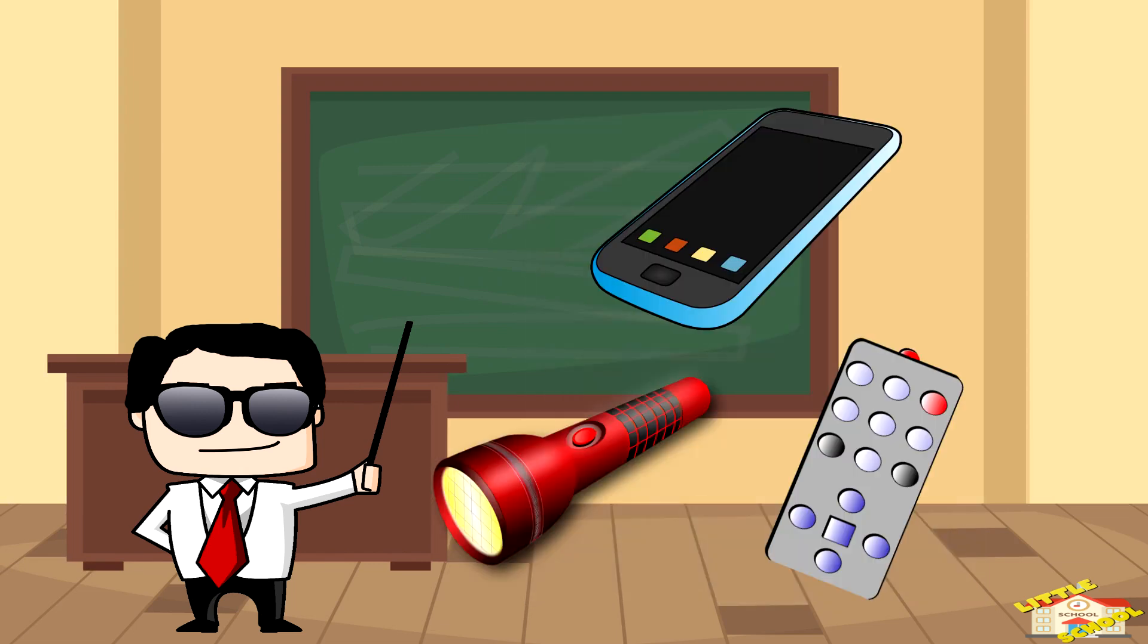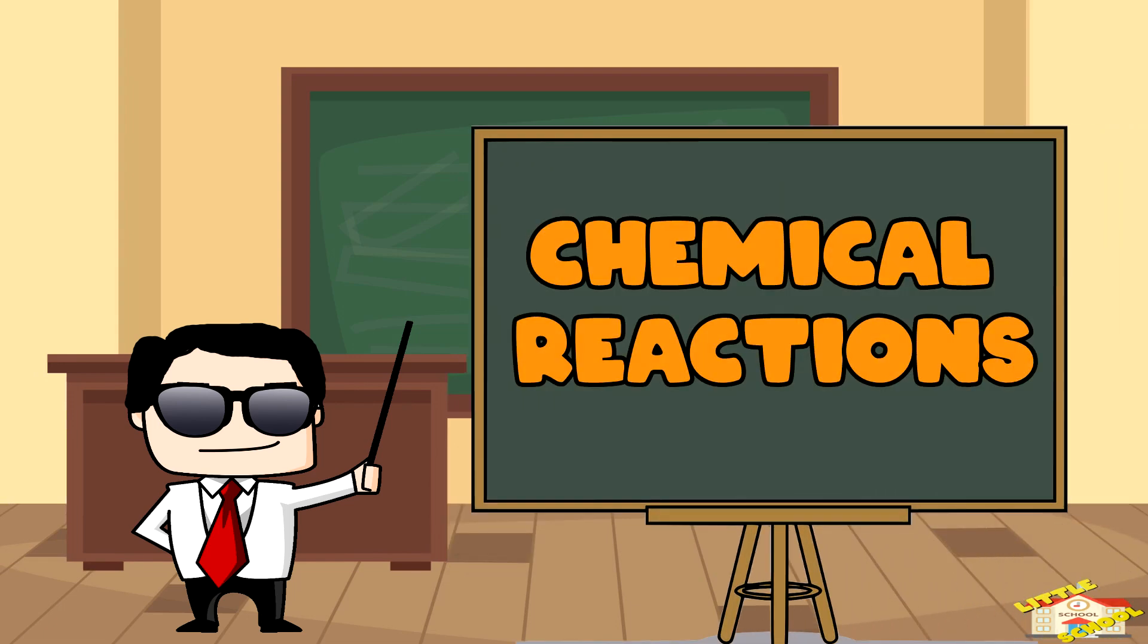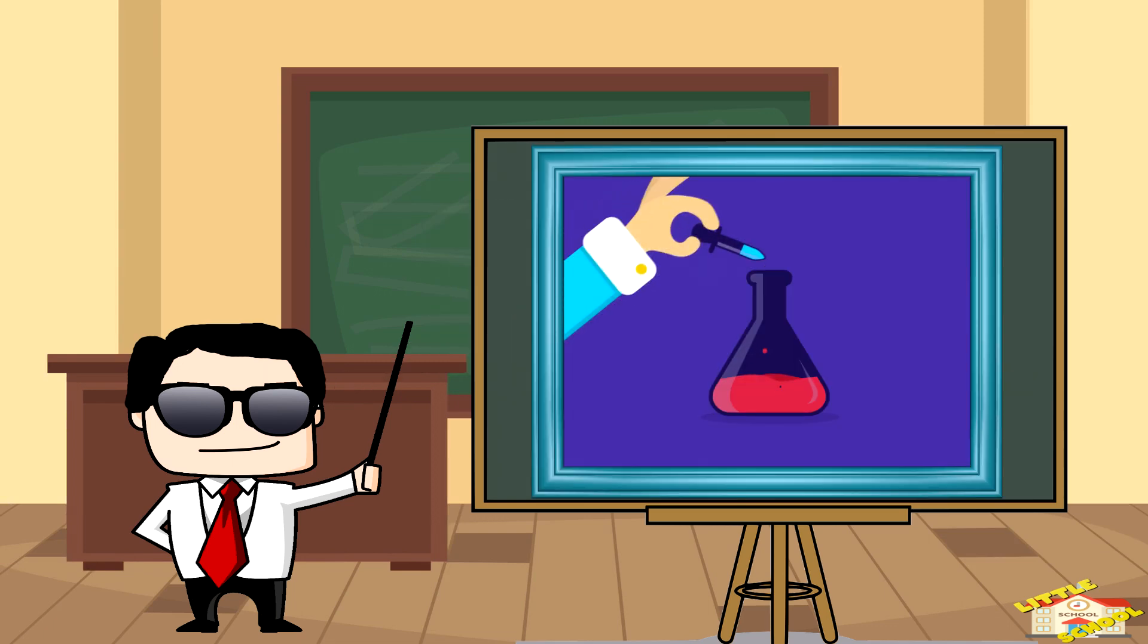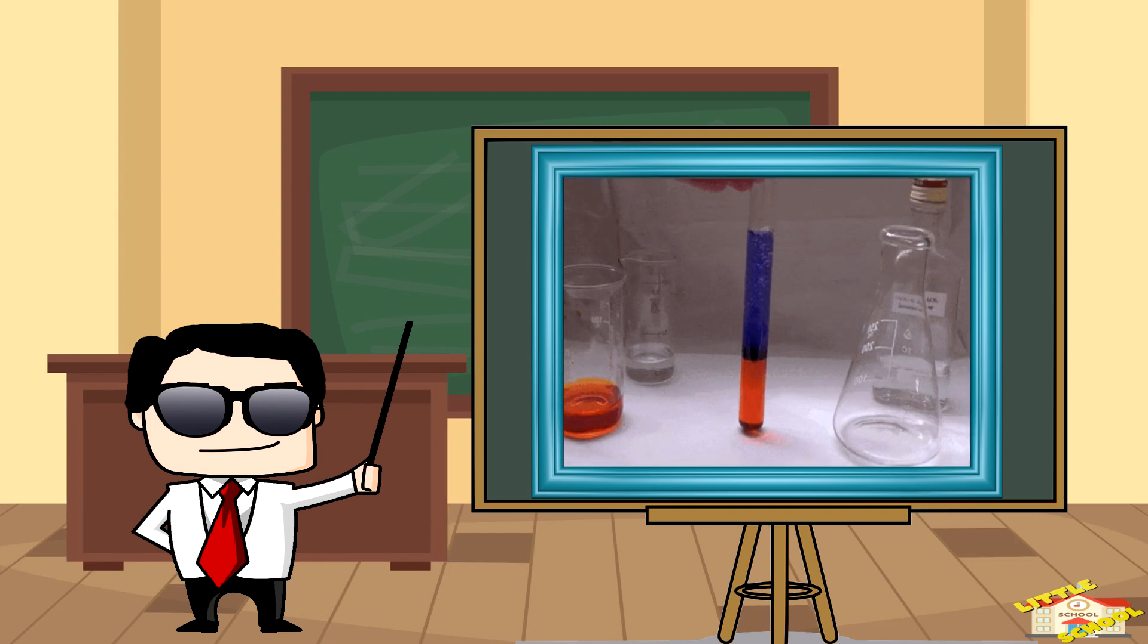Chemical energy is all about chemical reactions. When certain substances react with each other, the bonds between their atoms and molecules break and form, and this process either absorbs or releases energy.